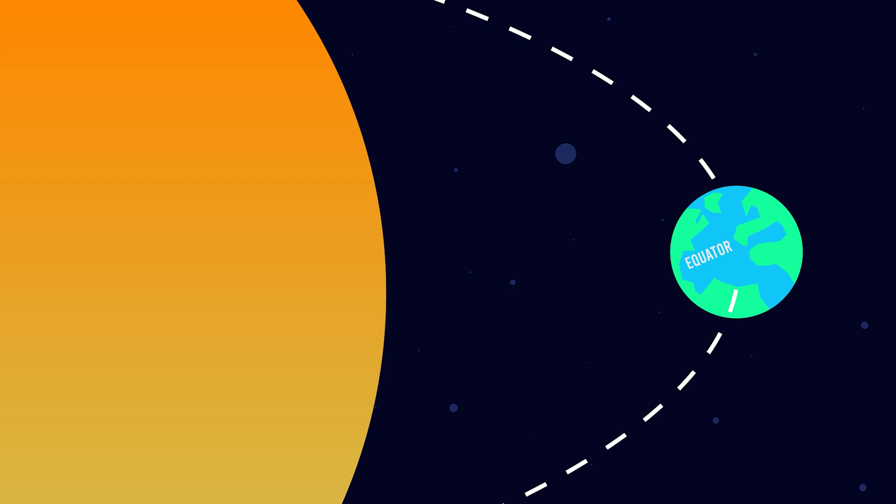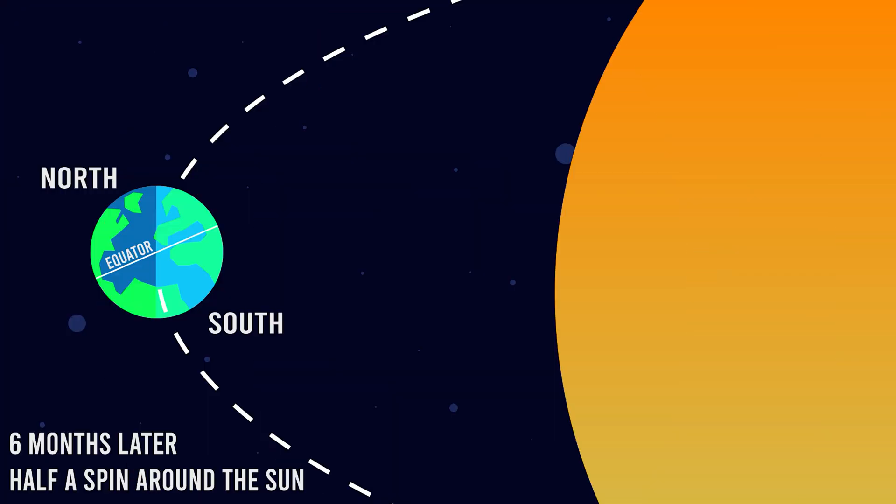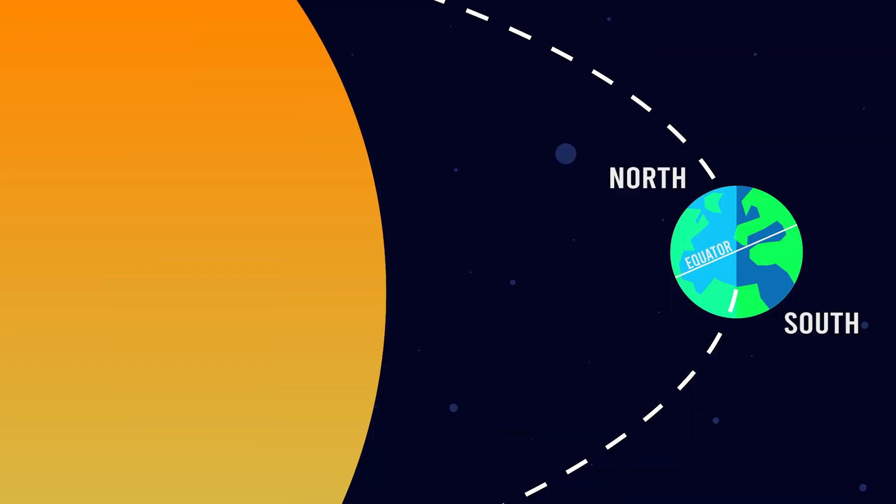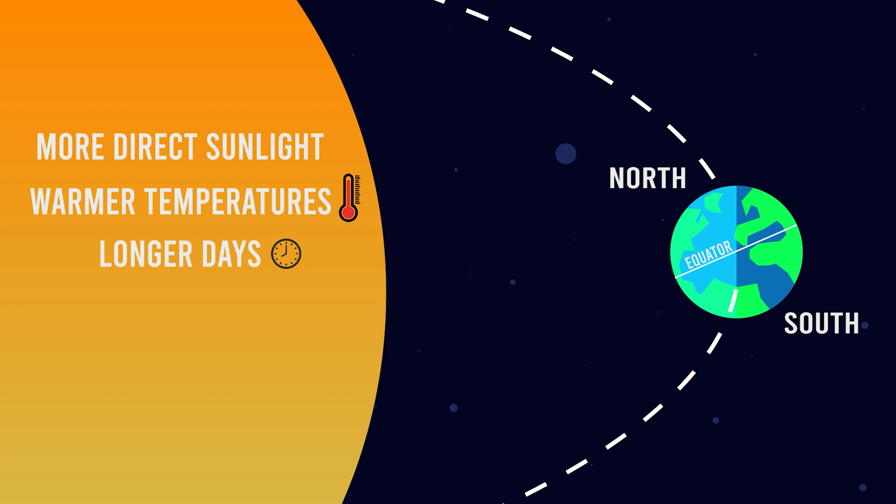As the Earth orbits the Sun, this tilt causes each hemisphere to experience periods of more direct sunlight and periods of less direct sunlight. When the northern hemisphere is tilted towards the Sun, it receives more direct sunlight, resulting in warmer temperatures and longer days. This is what we call summer.